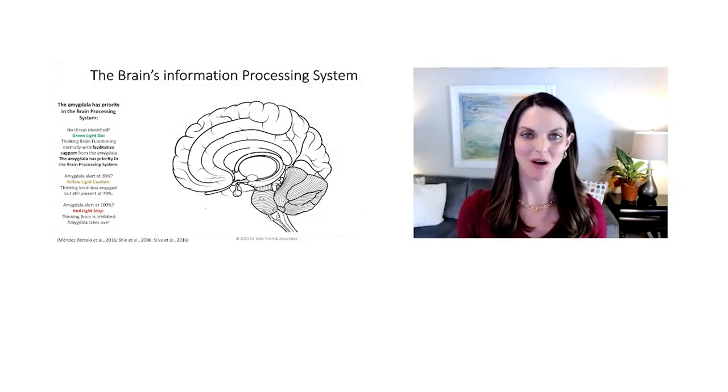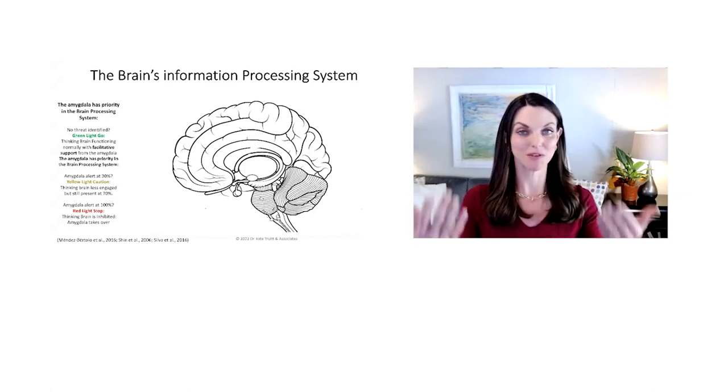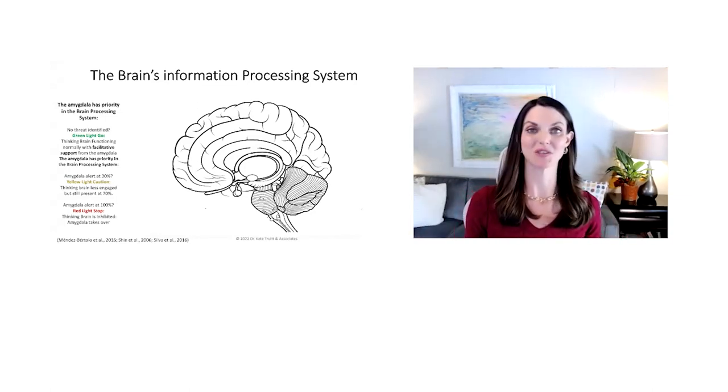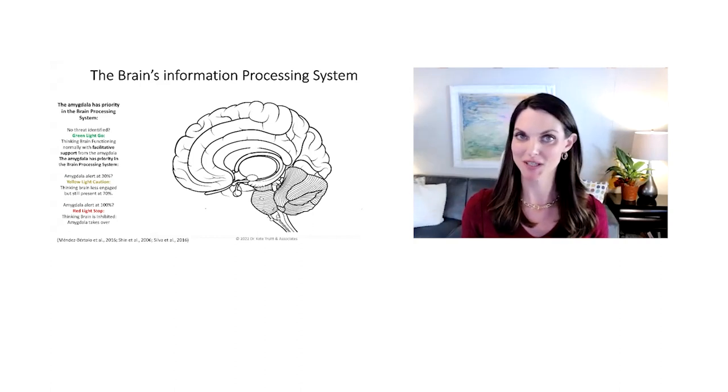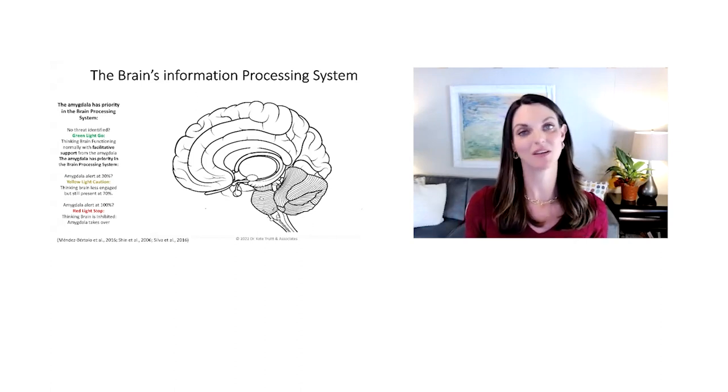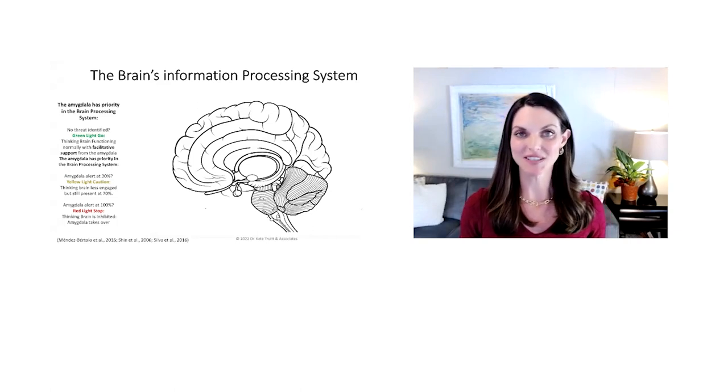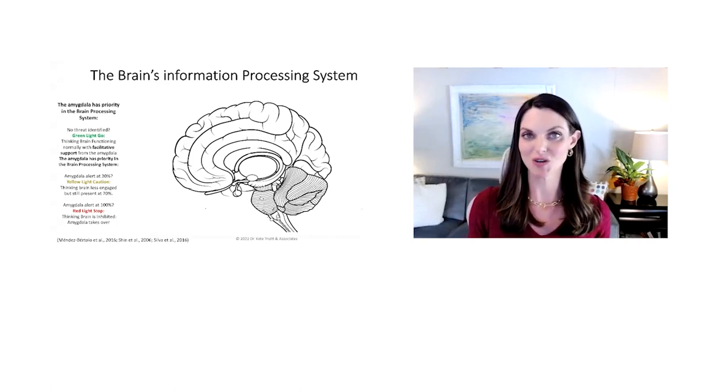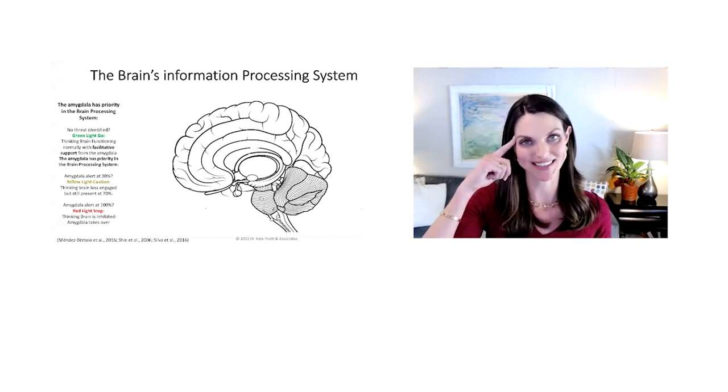In the previous video, we walked through the developmental trajectory of our brain from birth to adulthood and through the course of evolution. We highlighted the fact that our little friend Amy the amygdala is very powerful and has been around a long time doing a great job at keeping us safe. So let's now take a look at how she shows up in our day-to-day lives and impacts the way our brain is making sense of the world.